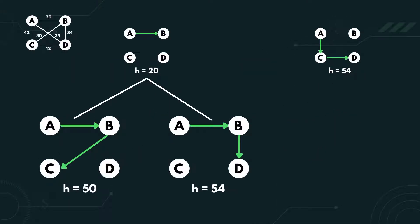We then need to generate all successors of both states. For the first one, the successor is A to B to C with heuristic value 50. And A to B to D with heuristic value 54.